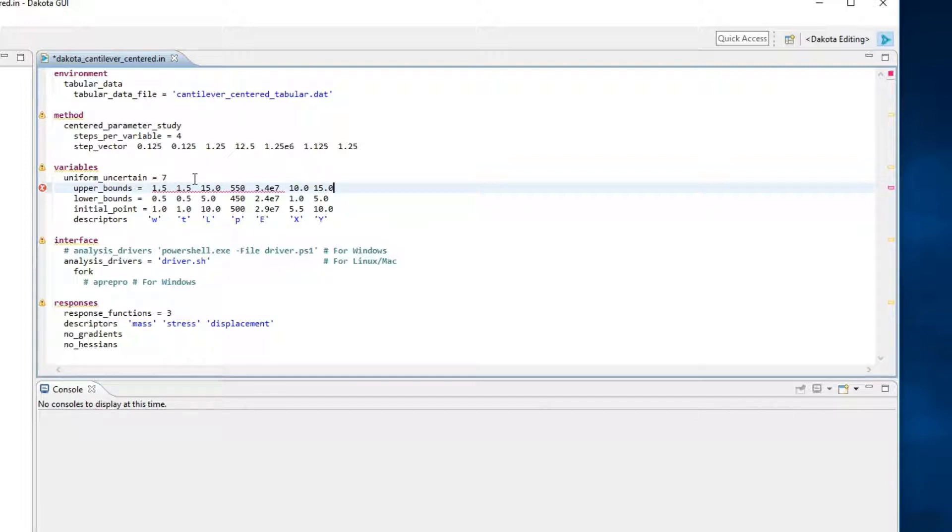As the number of variables in your study grows, manually editing these lists can become tiresome and error prone. Fortunately, the Dakota GUI provides special dialogues for editing variables, which we will cover in future tutorials.